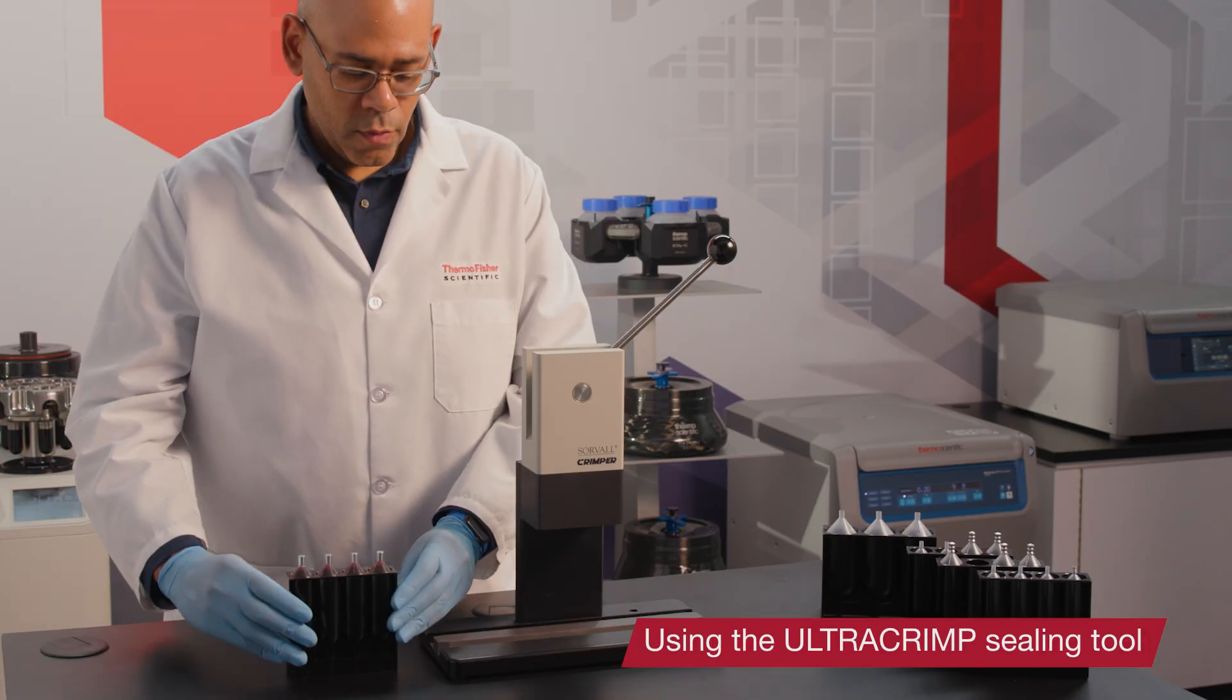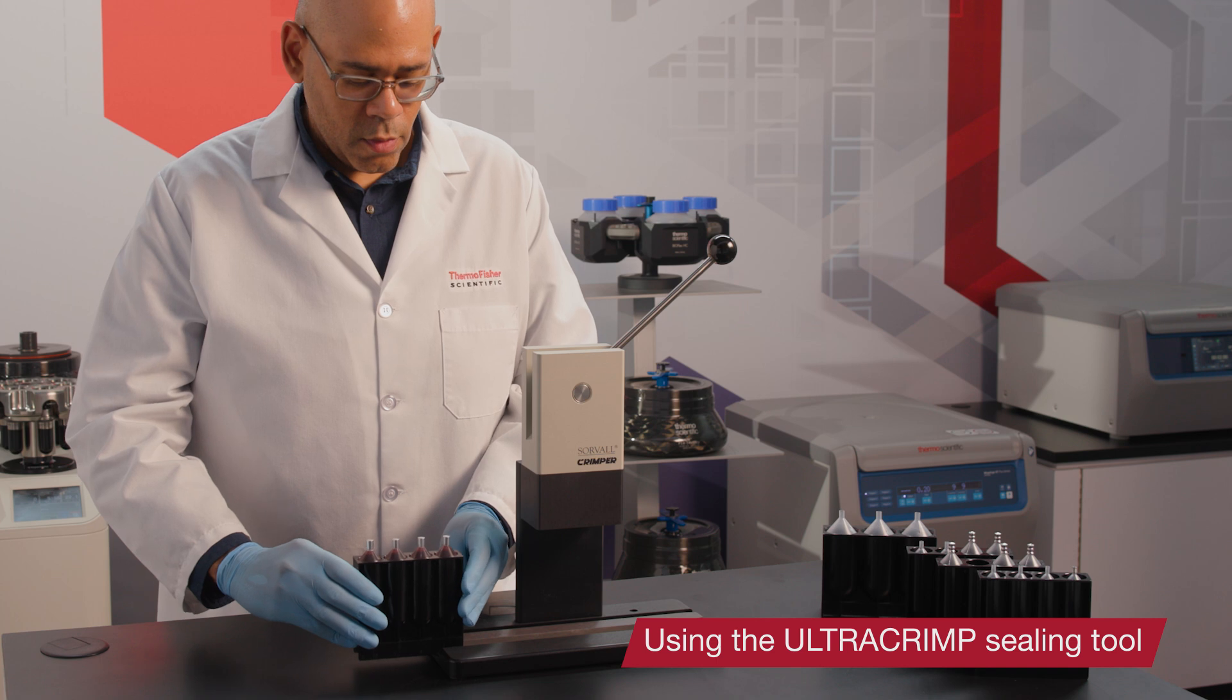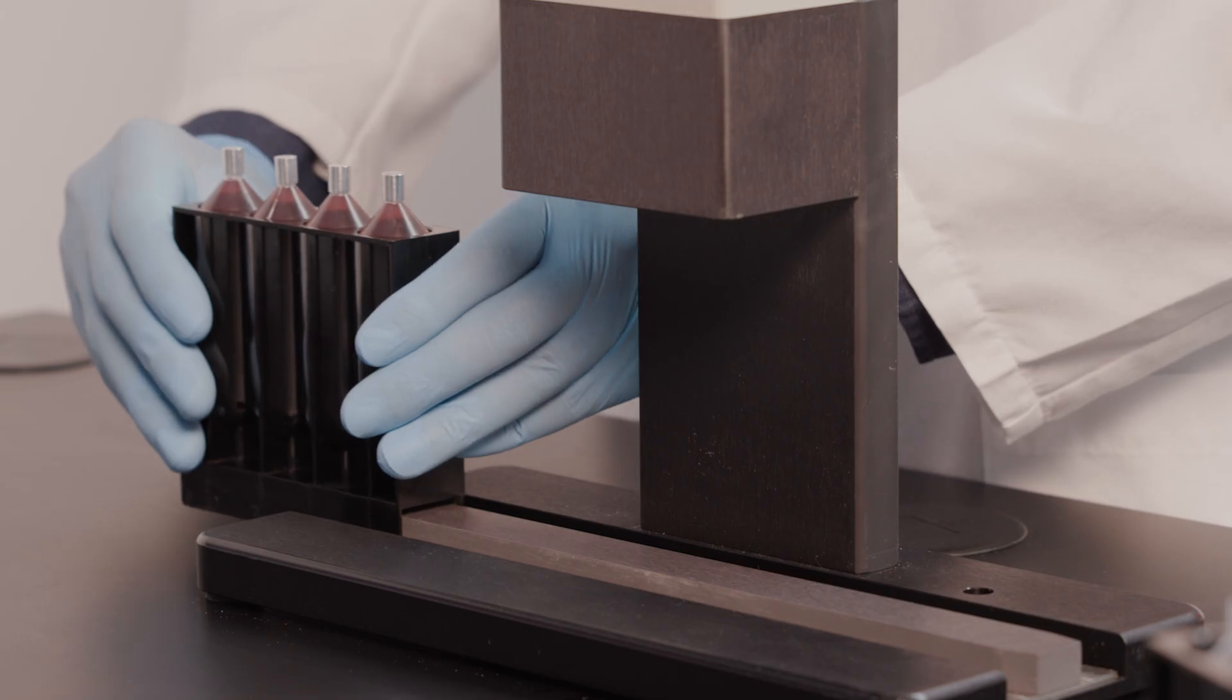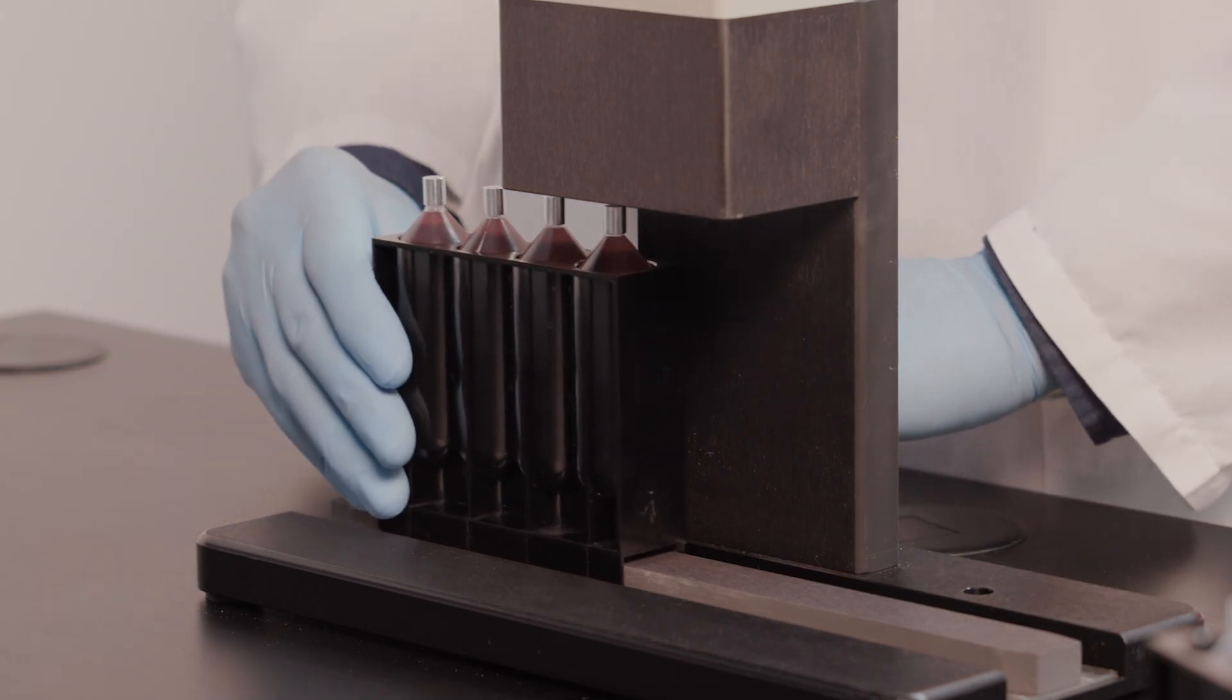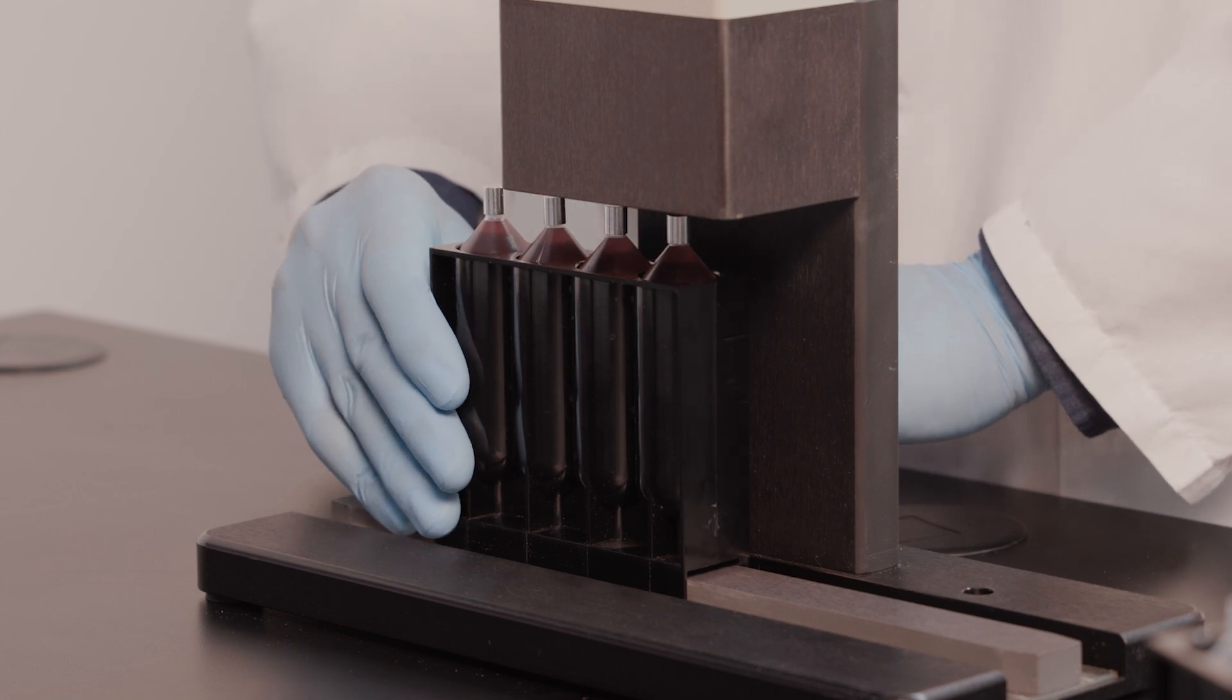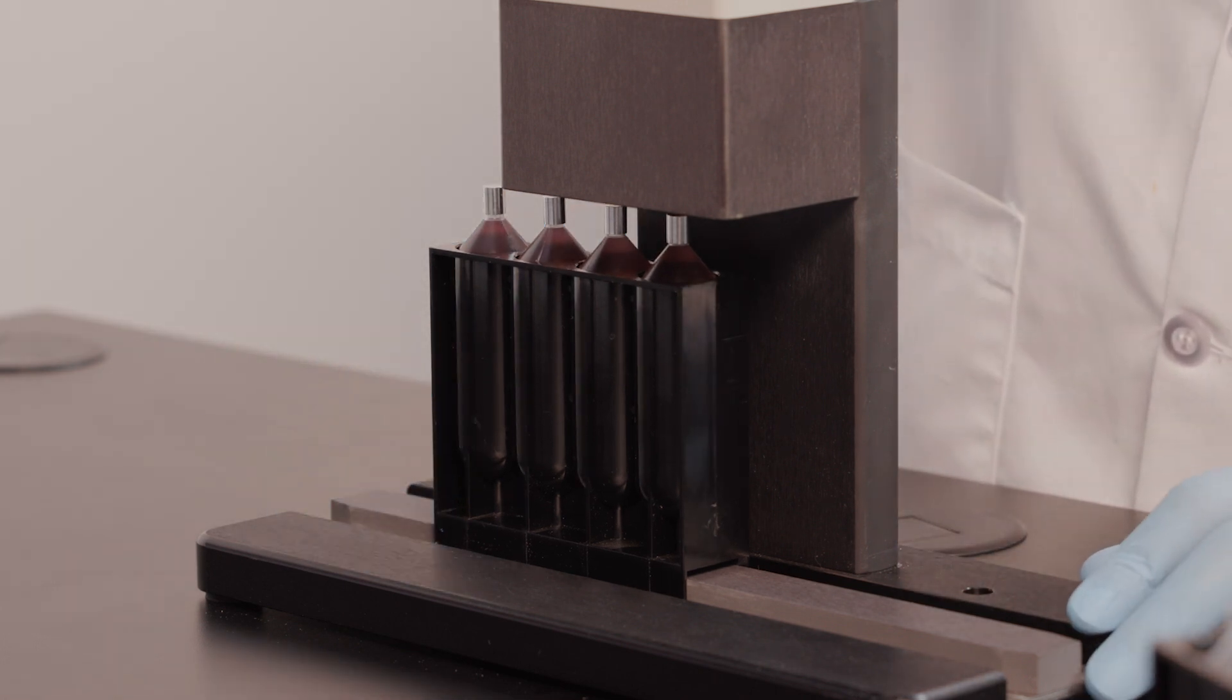Slide the tube rack into the ultracrimp sealing tool or crimper, placing the first tube directly under the crimping collet. The rack will click into place when it's in the proper position.